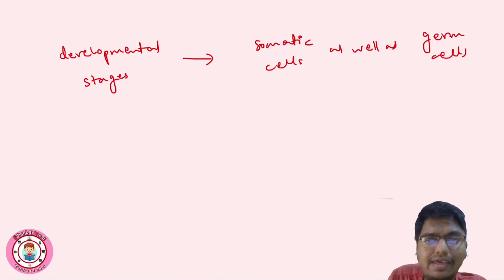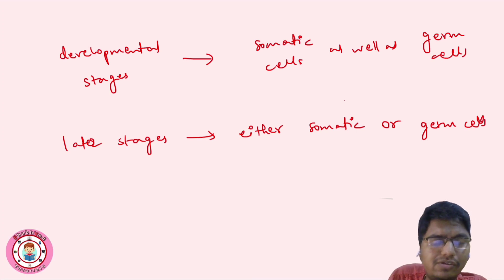So this will be transferred to the next generation as well as we will see the phenotype on the same individual. This is developmental. Now if the mosaic is in later stages or we can say adult stages, then there is a chance either somatic cells or germ cells are affected, not both.